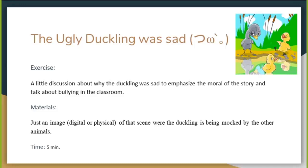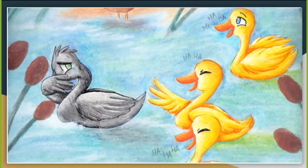Another topic we will be covering in this class has to do with bullying. The exercise, titled "The Ugly Duckling Was Sad," is a little discussion about why the duckling was sad, to emphasize the moral of the story, and then to talk about bullying in the classroom. The duckling was sad when he was not being respected by others — that's a good point to talk about bullying. For the materials, it could be an image — digital or physical — of that scene where the duckling is being mocked by other animals. Five minutes is intended for this activity.